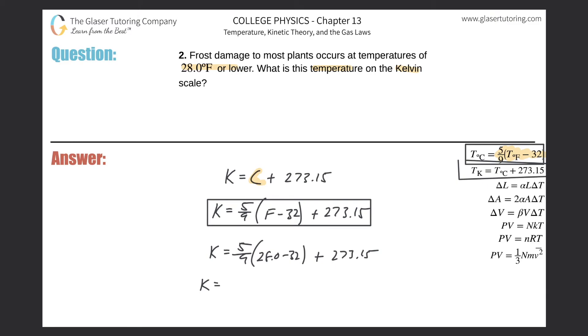So now when we do our math out, we get 5 ninths times then 28 minus 32, and then plus 273.15. And we get a value of about 270.9.